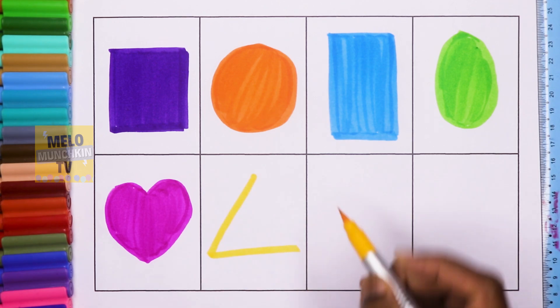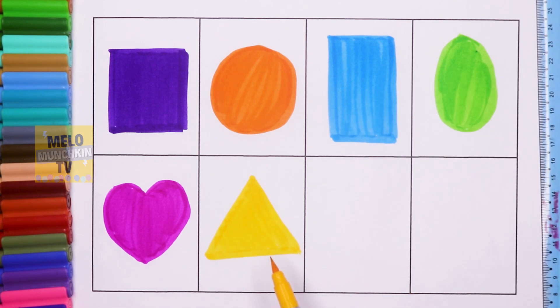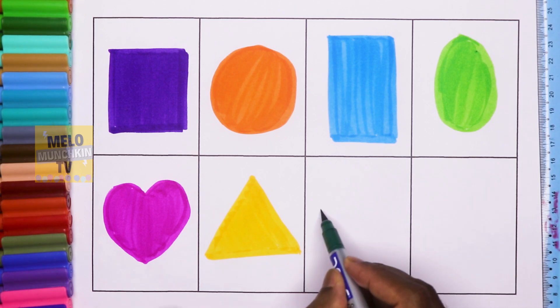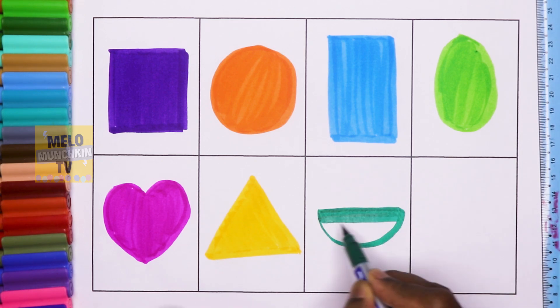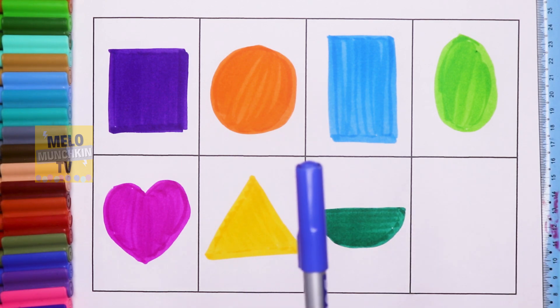So this is triangle. Next I'll take dark green color to draw a semicircle. So this is semicircle. And lastly I'll take dark blue color to draw a star.